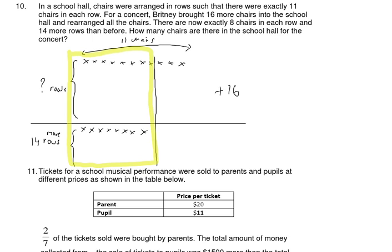The 16 chairs are actually placed in these extra 14 rows, and also all the sets of 3 chairs here are actually transferred to the new arrangement as well. Now, first of all, we need to find out the number of chairs in this region.